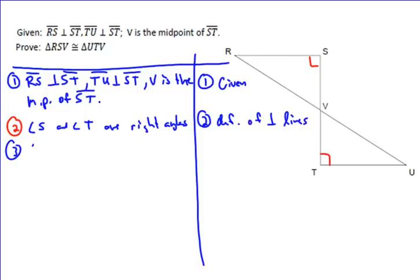Then because of that, we can make the claim that angle S is congruent to angle T. And that's the first thing we know based on those first two statements from our given.